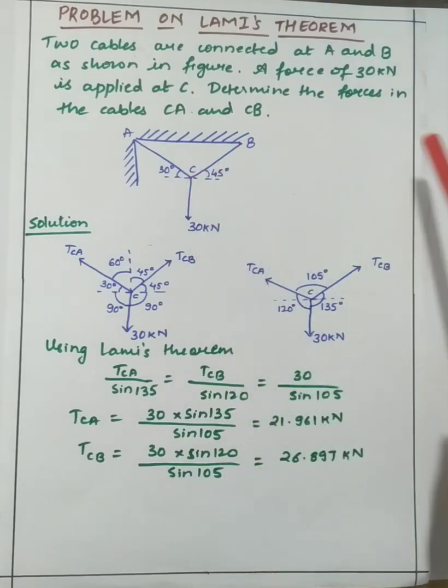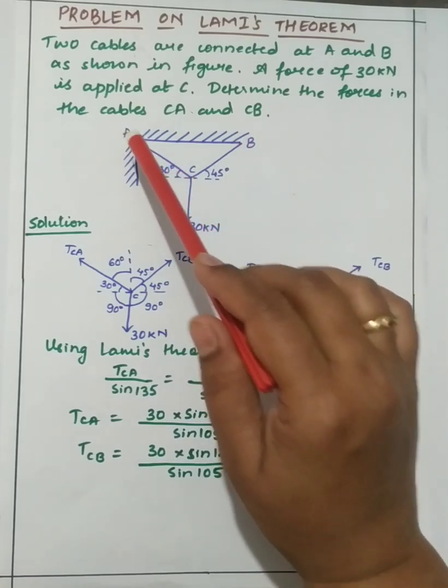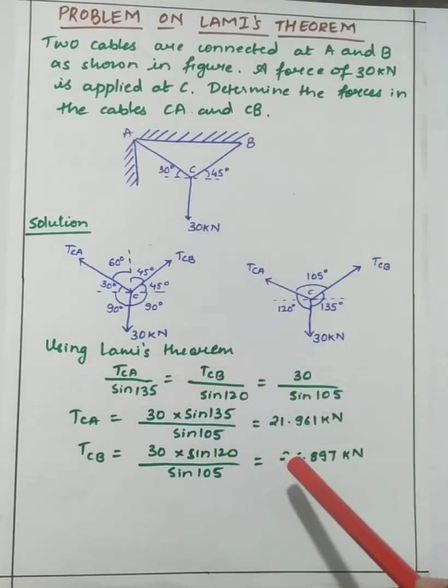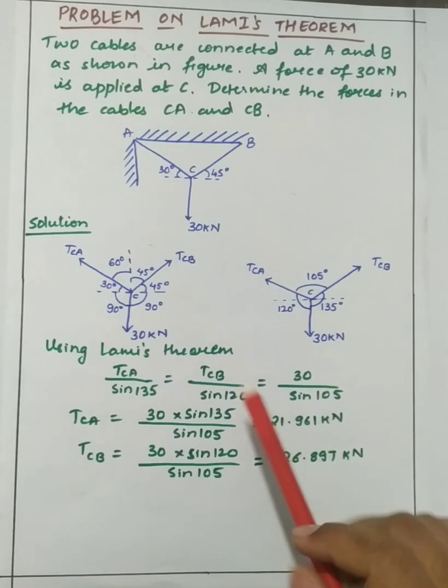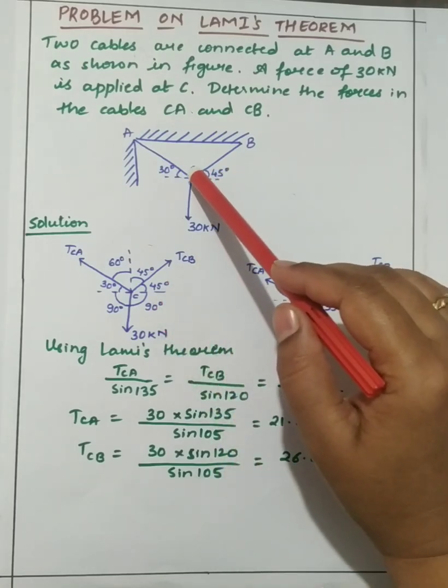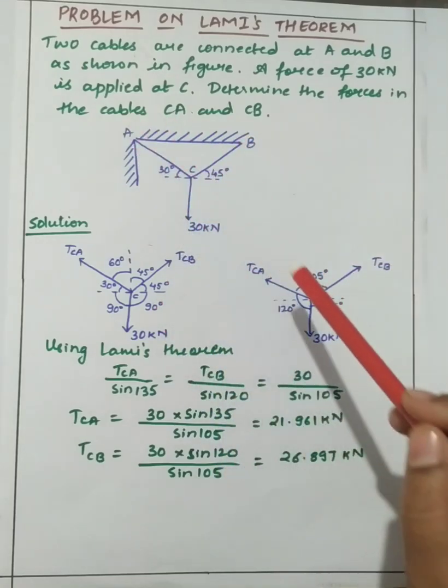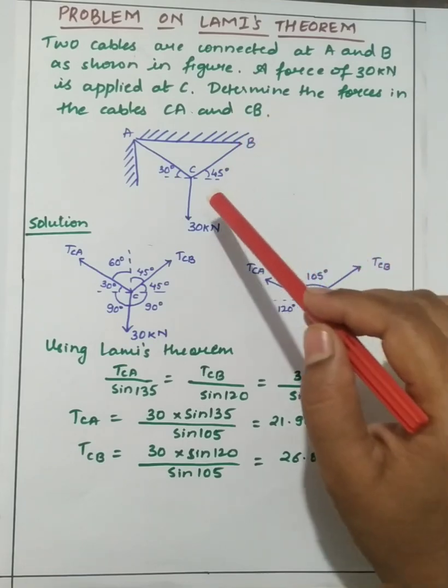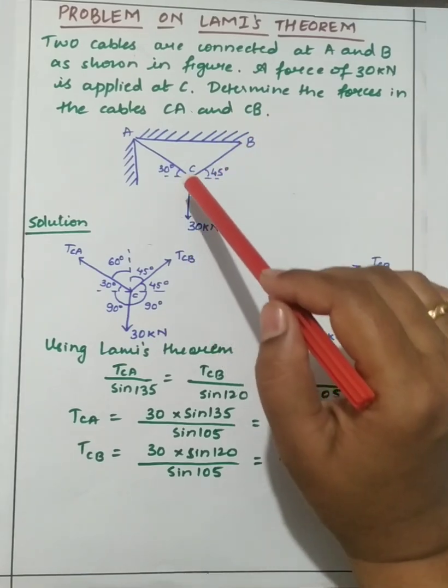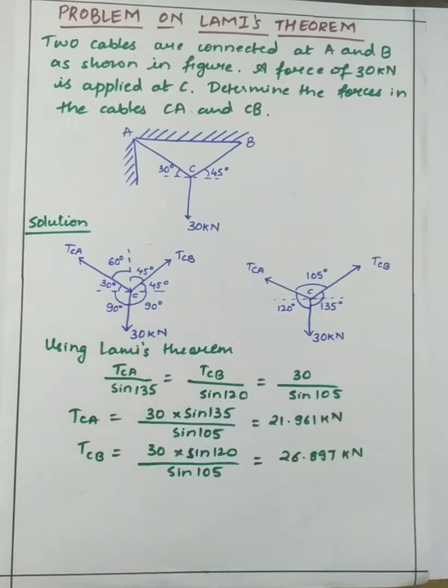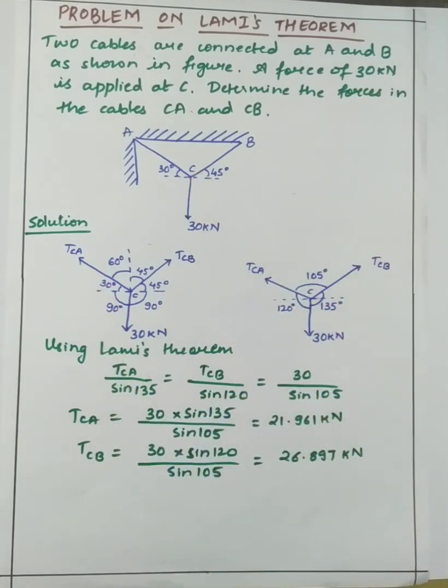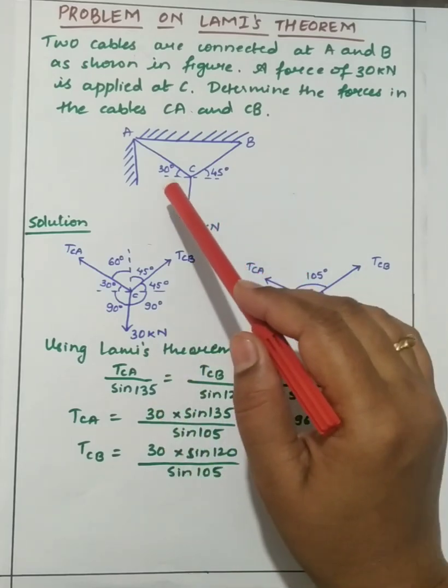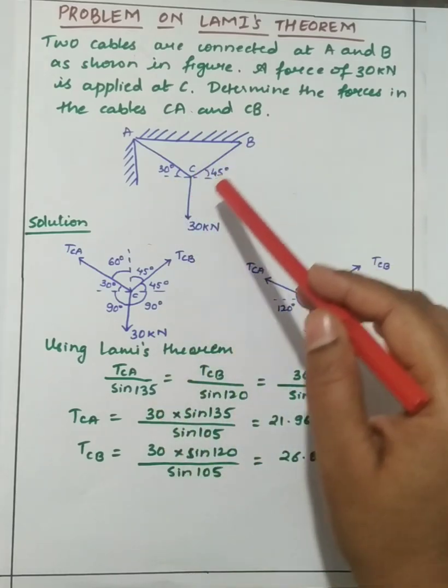Determine the forces in the cables CA and CB. So first we have to draw the forces. There will be tension in the cable - the tension in cable CB is TCB and in CA is TCA. The angles given are: cable CB makes an angle of 45 degrees with horizontal and CA makes an angle of 30 degrees with horizontal.